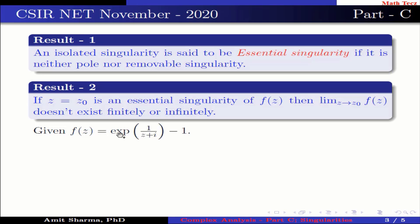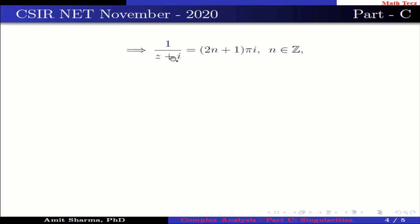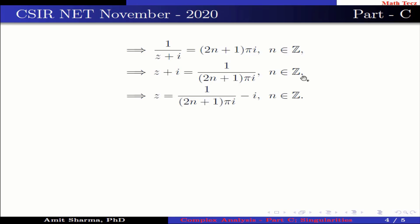Given f(z) = exponential of 1 upon (z + iota) minus 1. For zeros of f(z), put f(z) = 0. This implies exponential of 1 upon (z + iota) minus 1 = 0, which implies exponential of 1 upon (z + iota) = (2n + 1)πi, where n belongs to ℤ. This further implies z + iota = 1 upon (2n + 1)πi, n belongs to ℤ. Which implies z = 1 upon (2n + 1)πi minus iota, n belongs to ℤ.